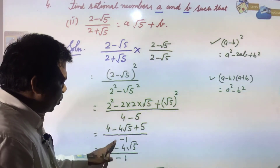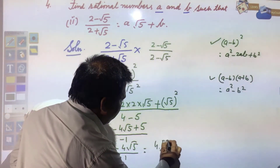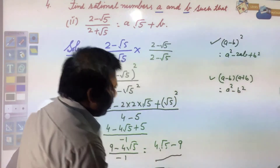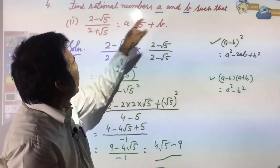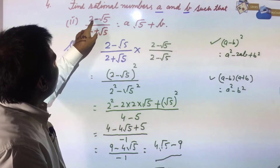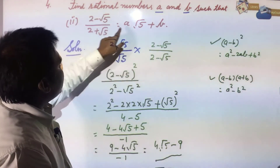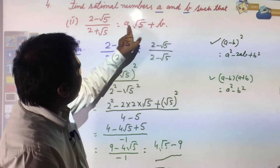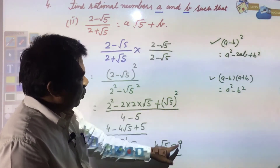Dividing by -1 gives -9 + 4√5, which can be written as 4√5 - 9. Now compare this with a√5 + b: since 4√5 - 9 = a√5 + b, we compare both sides to get a = 4 and b = -9.